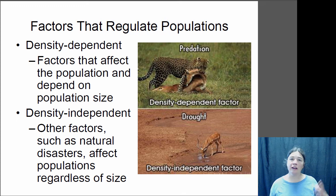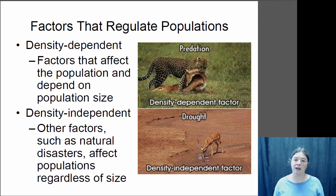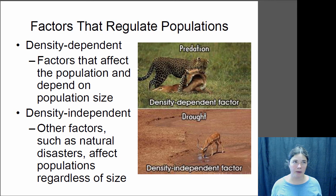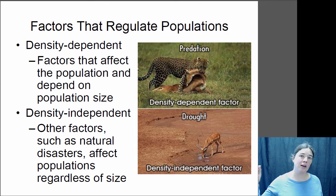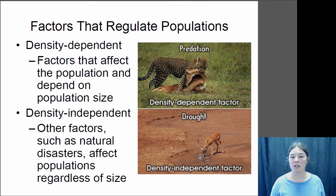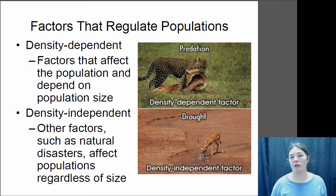Factors that limit population size include density dependent factors, which give us carrying capacities. Density dependent factors have a bigger effect when the population is larger. For example, if there are limited nesting cavities for a bird, when the population is small it's not a limiting factor — there are plenty of cavities. But when the population is large, some individuals can't find nest sites and the population grows more slowly. Predation is another example: as prey population grows, predator populations also increase and have a greater effect.